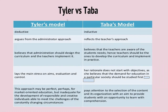Looking at Tyler versus Taba, some of the differences are: in Tyler's model, the approach is deductive, while in Taba's model, it is inductive. Tyler argues from the view of an administrator, while Taba reflects a teacher's approach. Tyler believed that administration should design the curriculum and the teachers should implement it. Taba believed that teachers are aware of the students' needs; hence, teachers should be the ones to develop the curriculum and implement it in practice.